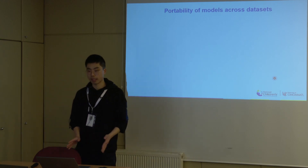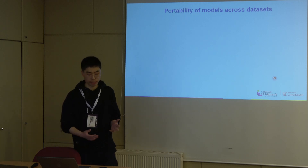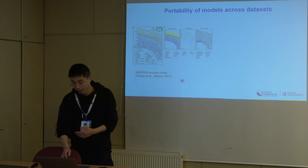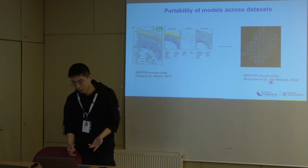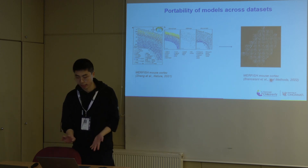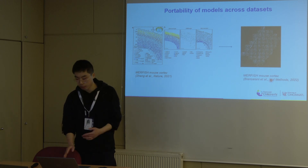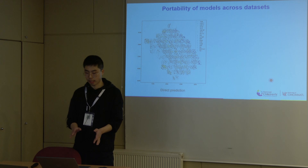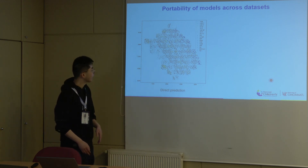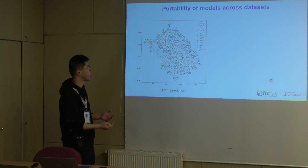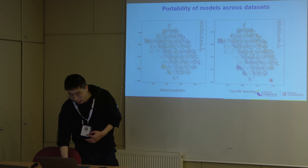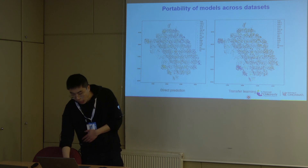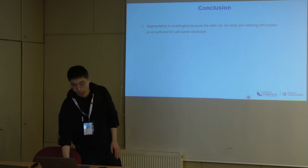We also did a survey about the portability of the model — whether we can train a model on one dataset and apply it to another. Here is an example using MERFISH mouse cortex data: we pre-trained a model on one dataset and then applied it to another mouse cortex dataset that may have batch effects or differences. When we directly applied the pre-trained model to the second dataset without fine-tuning, many dots were predicted as background. However, if we fine-tune the model on the new dataset through transfer learning, more cells can be predicted with the correct cell annotations.